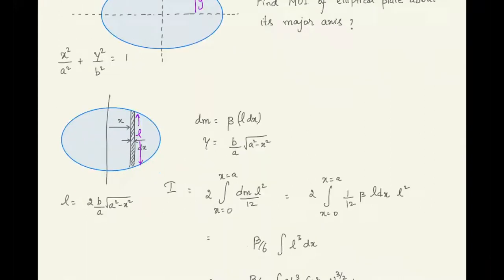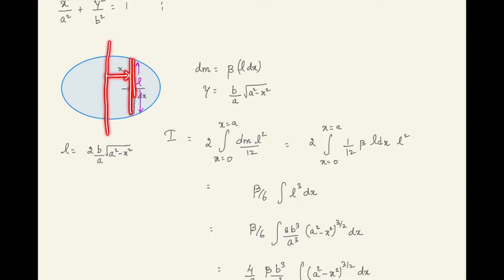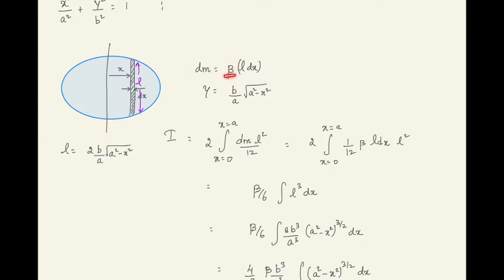Looking at the diagram, we want to find the moment of inertia about the major axis. From the y-axis at a distance x, we take a small thin rod of width dx. The moment of inertia for that rod about the axis of rotation can be written using ml²/12. That rod has a mass dm, which we write as mass per unit area β multiplied by the area of the thin rod — so β·l·dx, where l is the length of that rod.